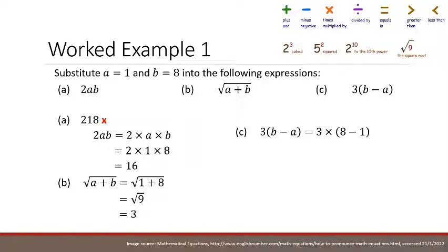Part C says 3(b-a), and that equals 3×(8-1) by substituting. Notice that the 3 before the brackets means 3 times. We usually do the brackets first, so 8-1 is 7, and 3×7 is 21.